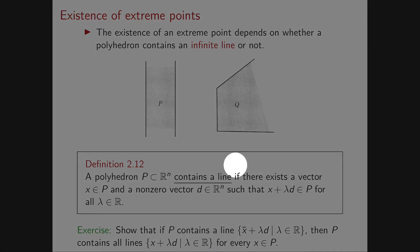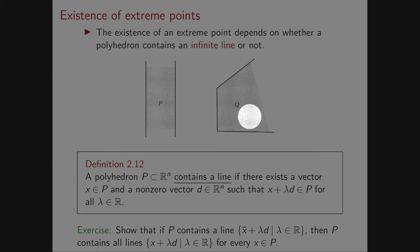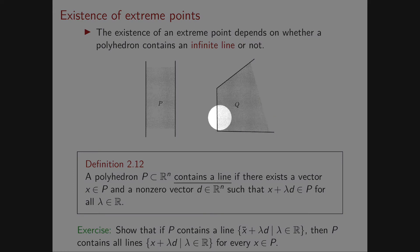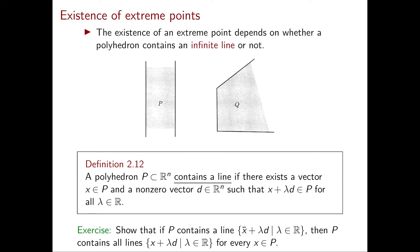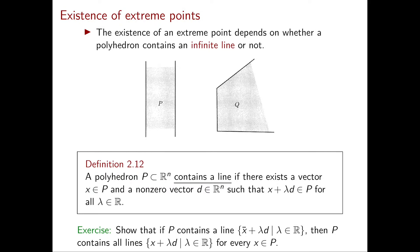For example, a vertical line will exit Q both at the bottom and at the top. A horizontal line does better — on the right it stays contained in Q, but on the left it eventually exits the polyhedron. Of course there are not just vertical and horizontal lines; you should try any possible slope, but our intuition tells us that Q doesn't contain any line.